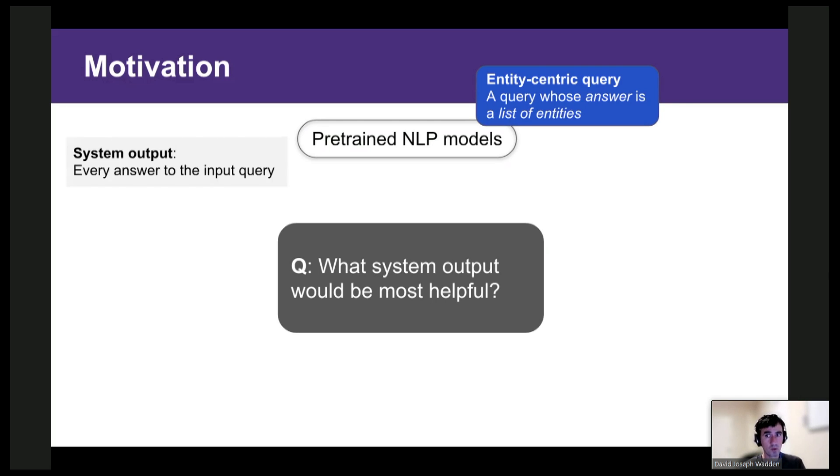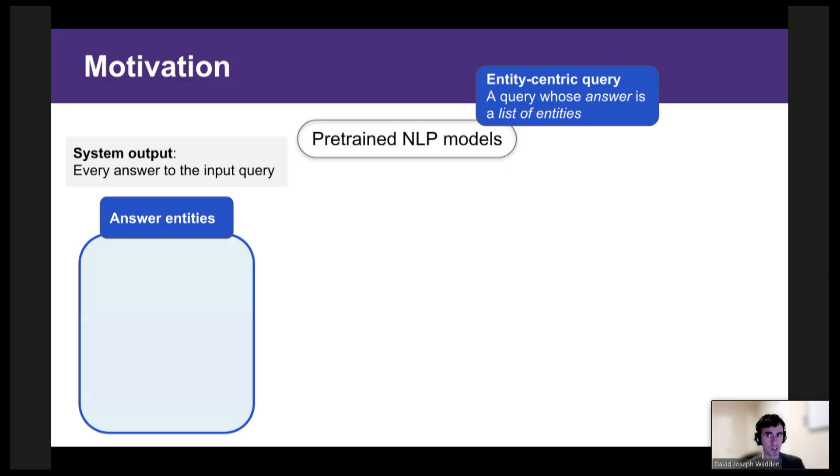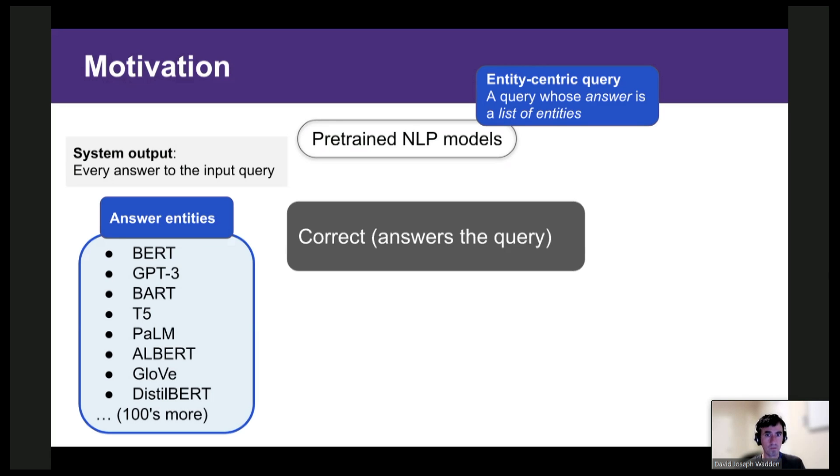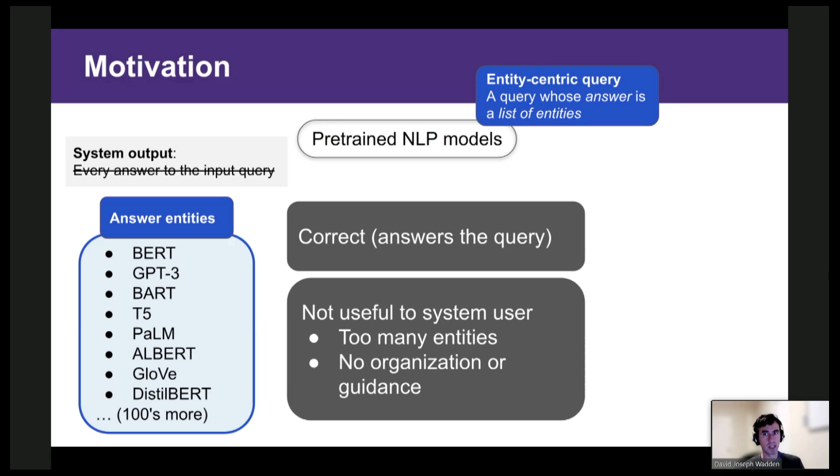For this type of query, one output that we could show the user would be a list of every entity answering the query. So this list would have models like BERT, GPT-3, BART, etc. And showing this list would technically be correct, but it's also unlikely to be useful. There are too many answers for the user to make sense of, and there's no organization or guidance indicating which entities might be the most relevant.